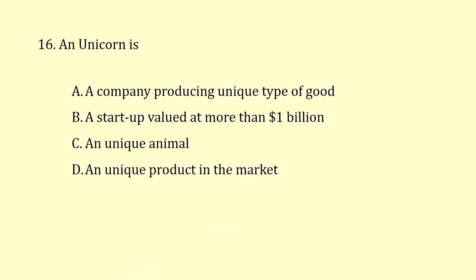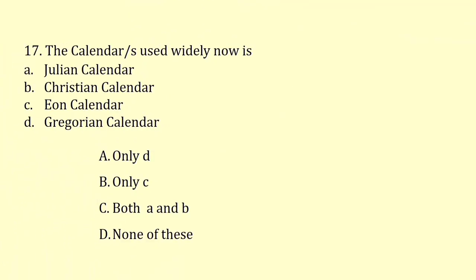A unicorn is a startup valued at more than 1 billion dollars. The calendar used widely now is the Gregorian calendar, so the correct answer is option A.